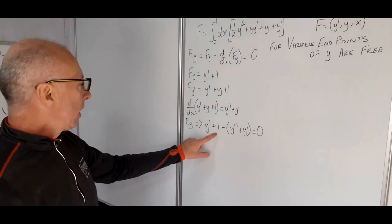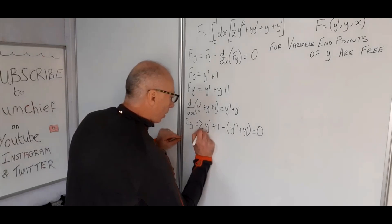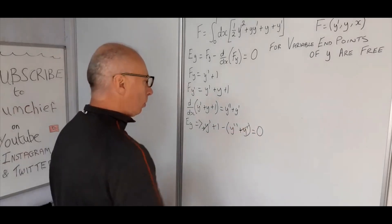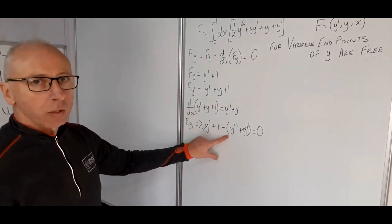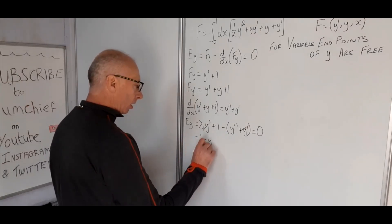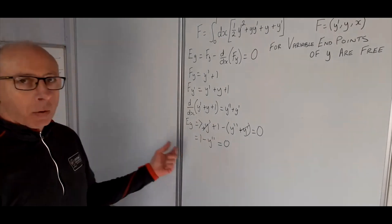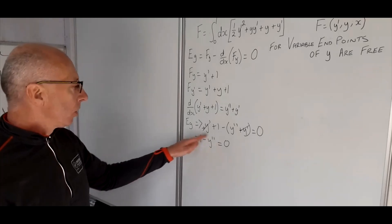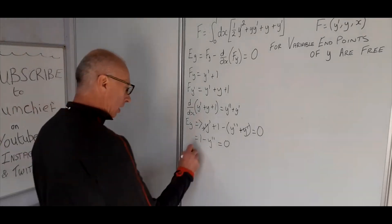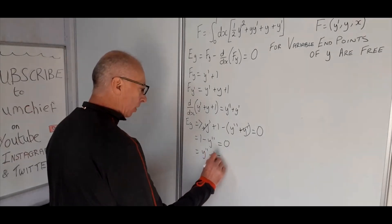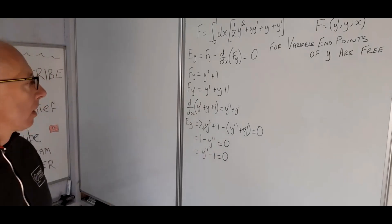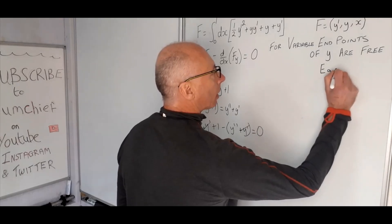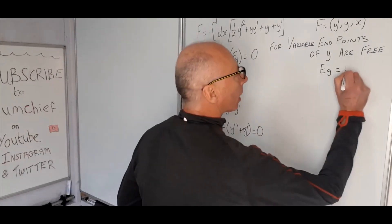With some simplification: we've got a y prime here and a y prime there — one positive, one negative after distributing — so these two cancel out, and we're left with 1 minus y double prime equals zero. Bringing the highest order term to the front and multiplying through by minus 1 gives y double prime minus 1 equals zero. That's our Euler-Lagrange equation.